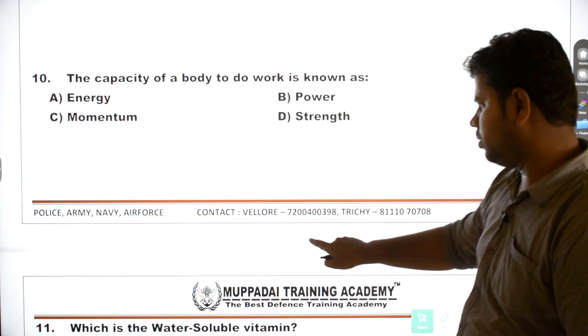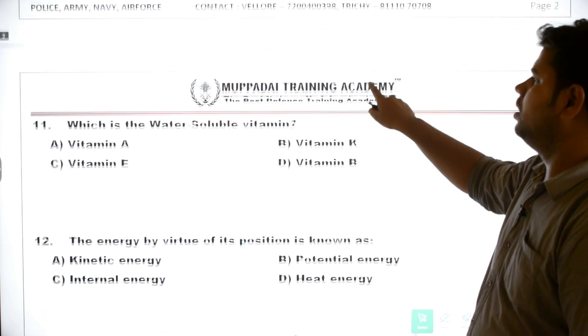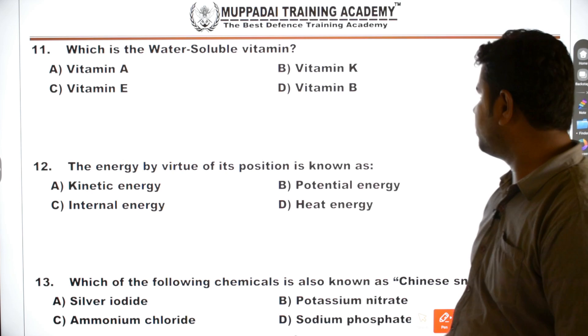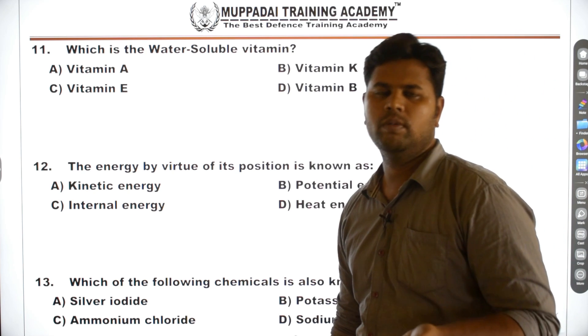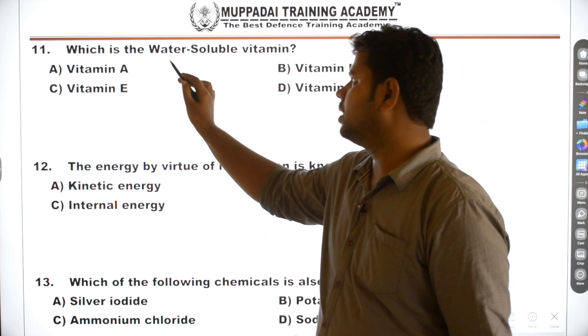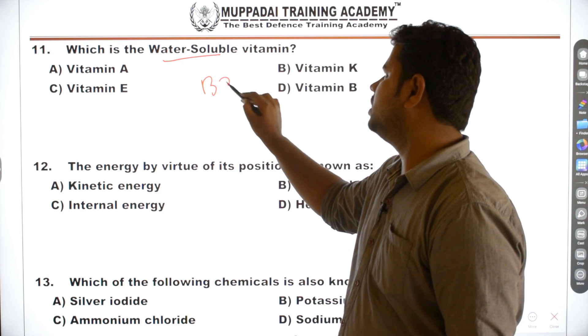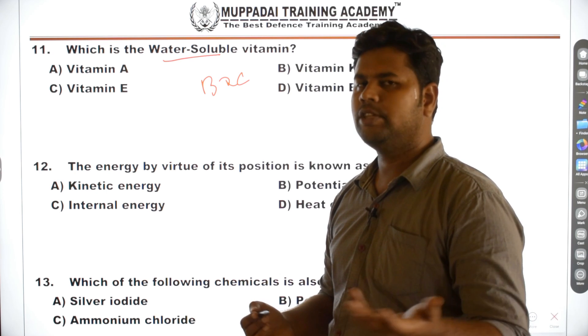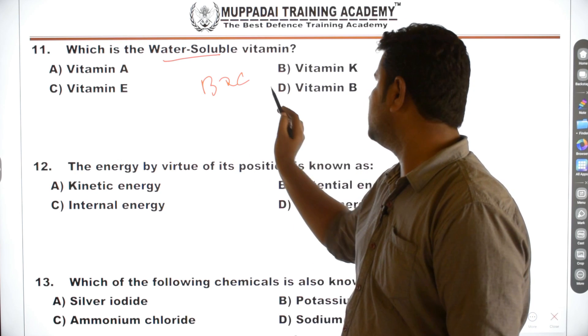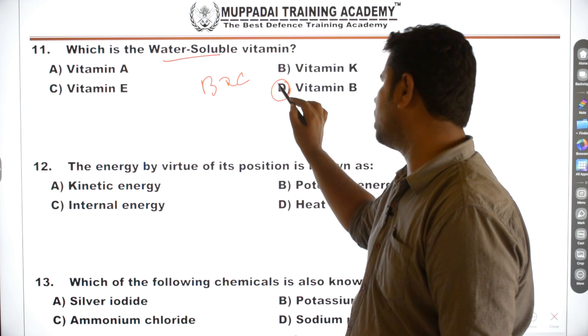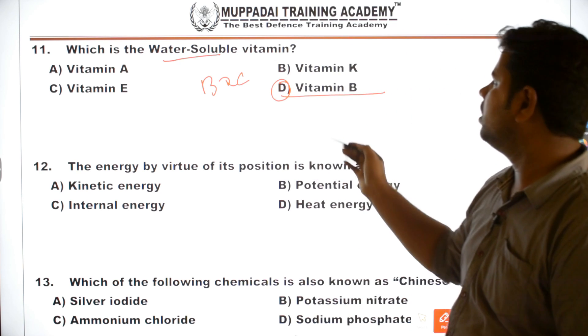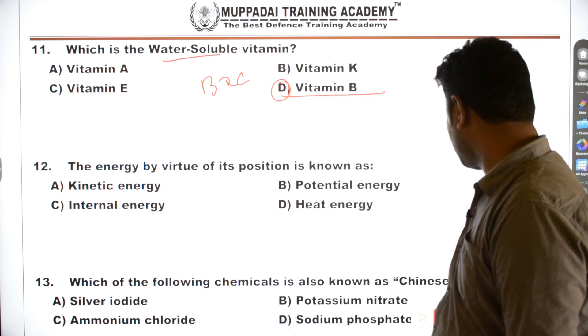Next one is the 11th one. Which is the water-soluble vitamin? Vitamin in the two types, one is water-soluble, one is fat-soluble. Water-soluble one is vitamin B and C is water-soluble. Remaining one is fat-soluble. B and C, the answer is vitamin B. Option D is the answer.